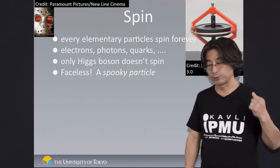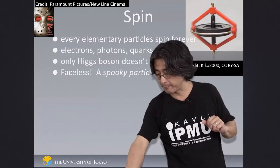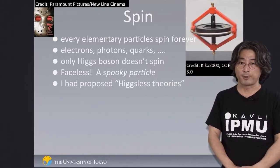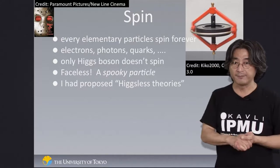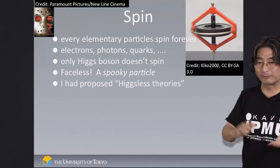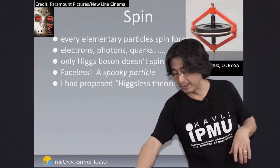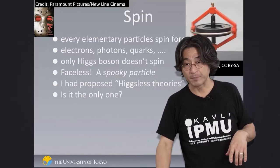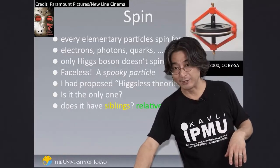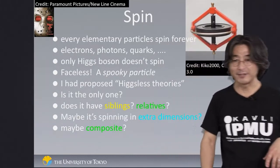That's the way the Higgs boson should be, and we would like to verify that based on our measurement. Because it's so spooky to even think about a particle with no spin — a faceless object — I even proposed a theory called Higgs-less theories, because I despised the idea. We didn't want these spooky particles around. But it looks like the Higgs boson has been discovered. So, as a proper Japanese, I need to apologize.